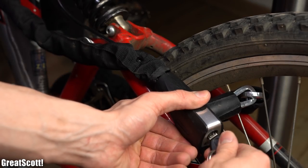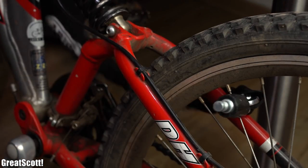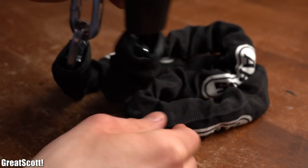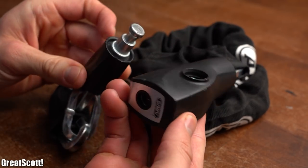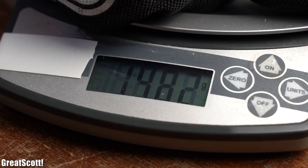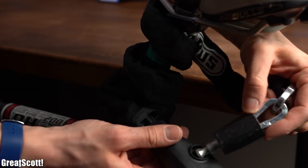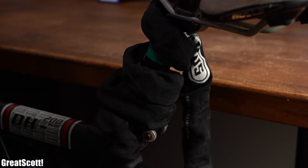When it comes to bike locks, the recommendation is always the bigger the better, which is most of the times correct. But big locks are always heavier and not that easy to carry around.